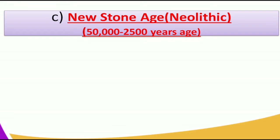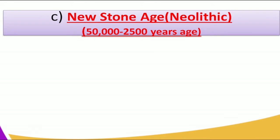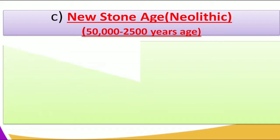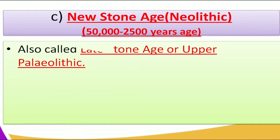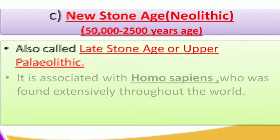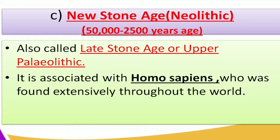In today's lesson we are going to look at the New Stone Age period, which is also known as the Neolithic period. This is a period in history that existed between 50,000 to 2,500 years ago. It is also known as the Late Stone Age period or the Upper Paleolithic. It is associated with the Homo sapiens, who was found extensively throughout the world.